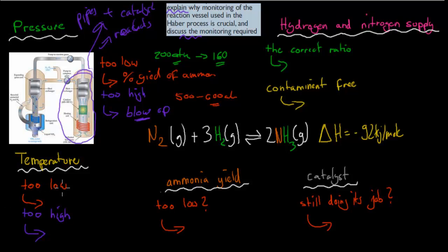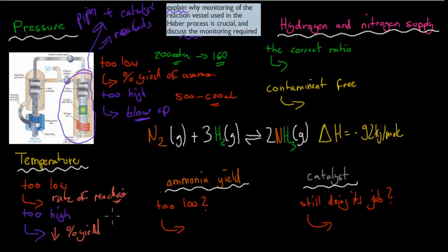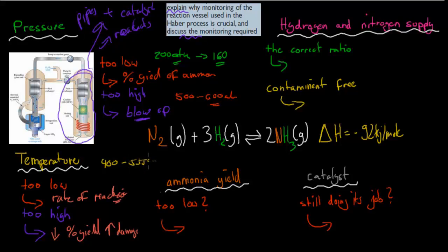Why do we look at temperature? If it's too low, the rate of reaction will go down, which means overall we get less ammonia. If it's too high, not only will there be too big a decrease in percentage yield, but there's also an increased potential for damage. Higher temperature makes particles move faster, which also increases pressure — and too high pressure means the reaction vessel might blow up. So we want to make sure the temperature is not too low or too high, ideally in the 400 to 550 degrees Celsius range.